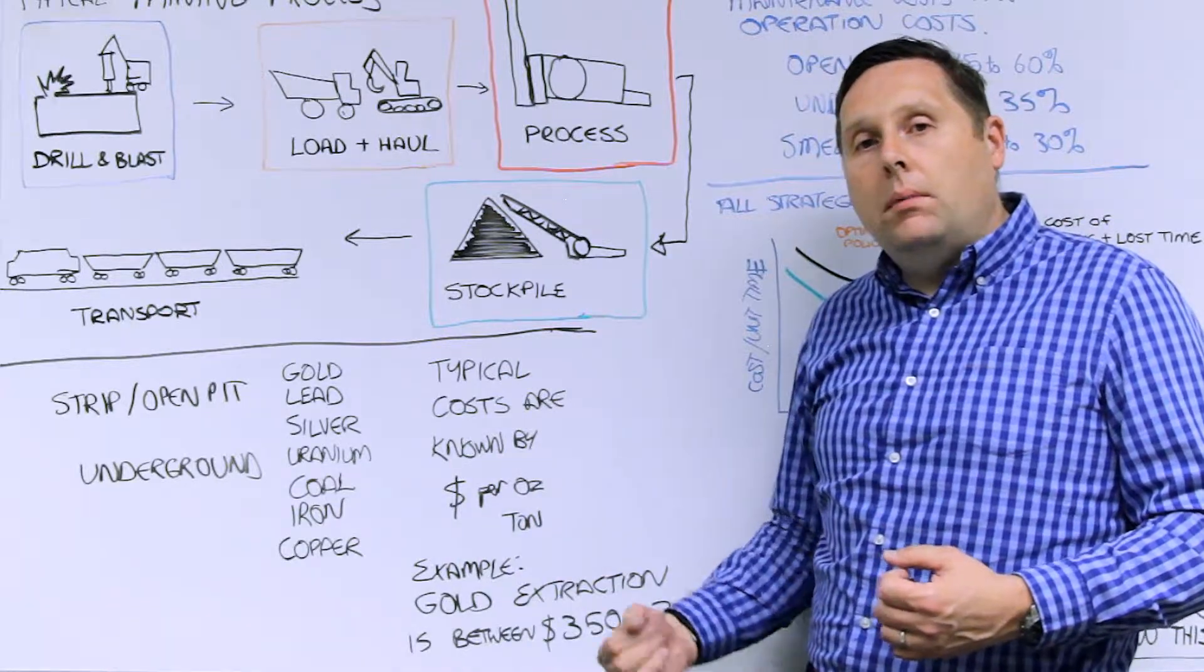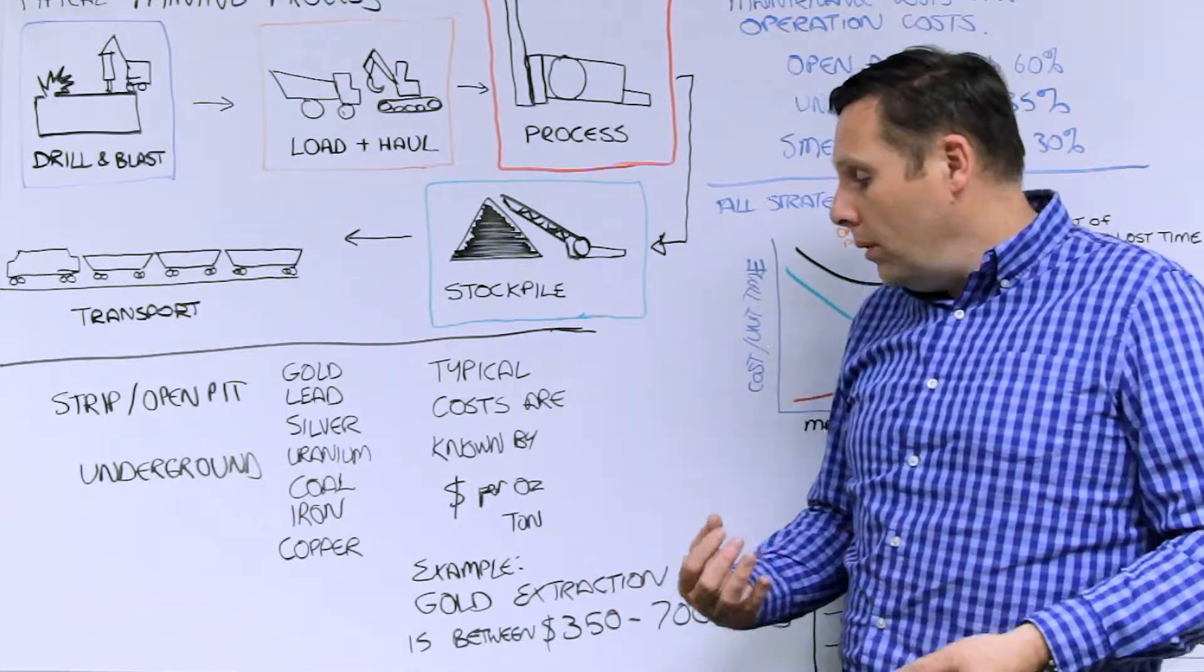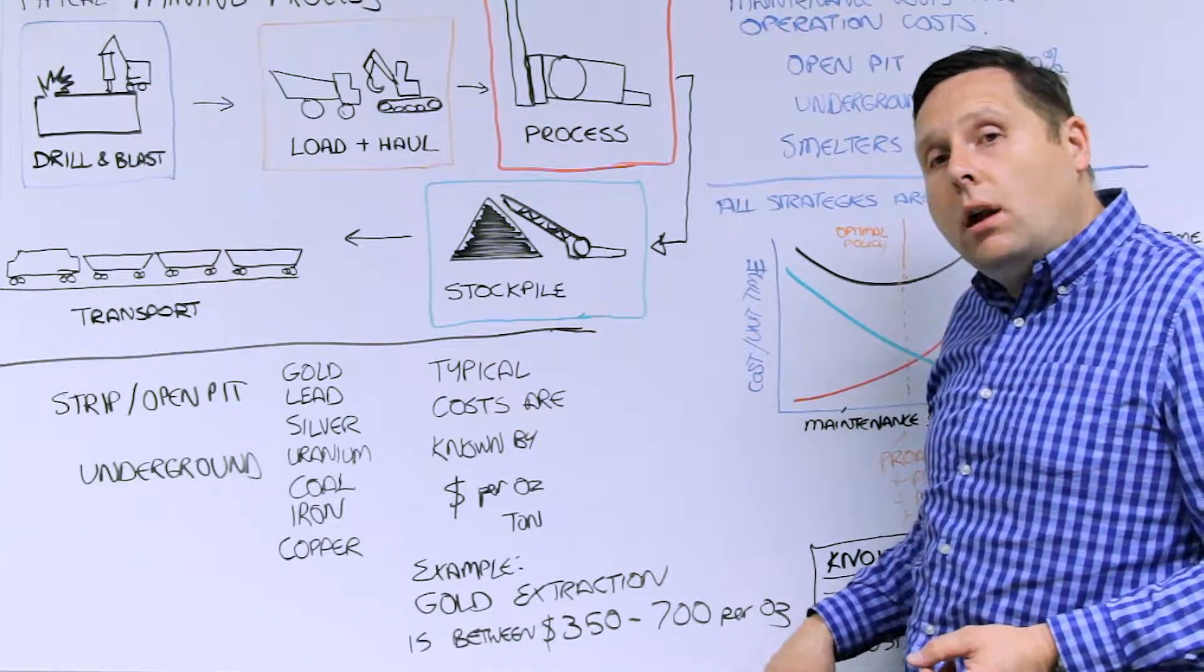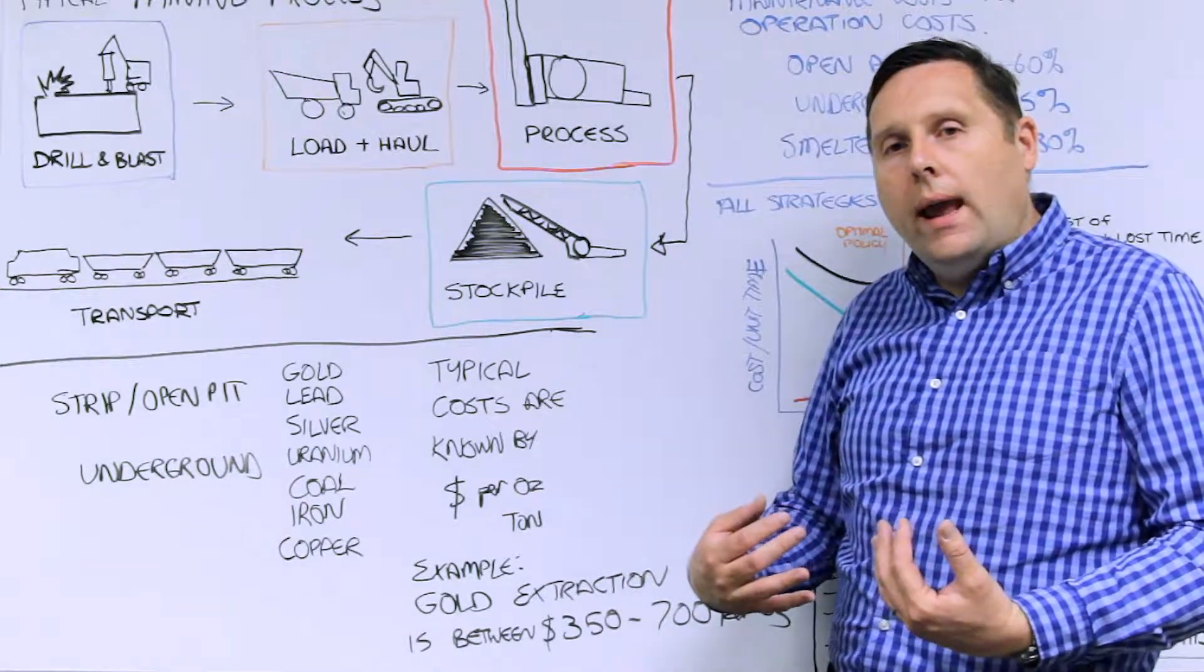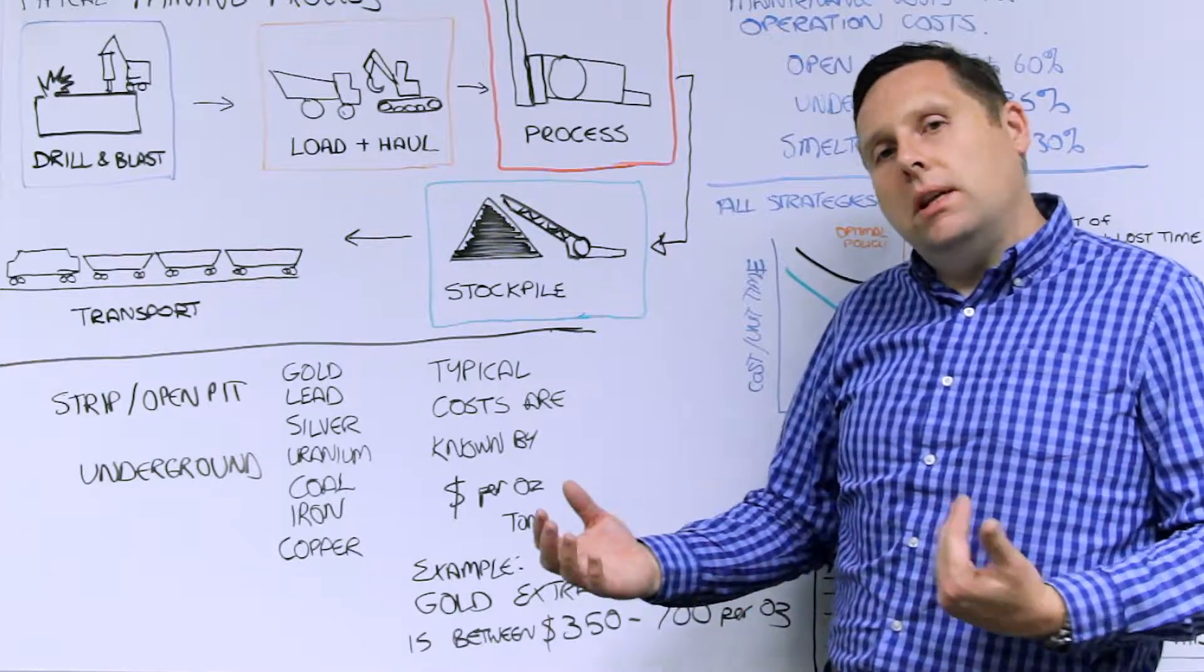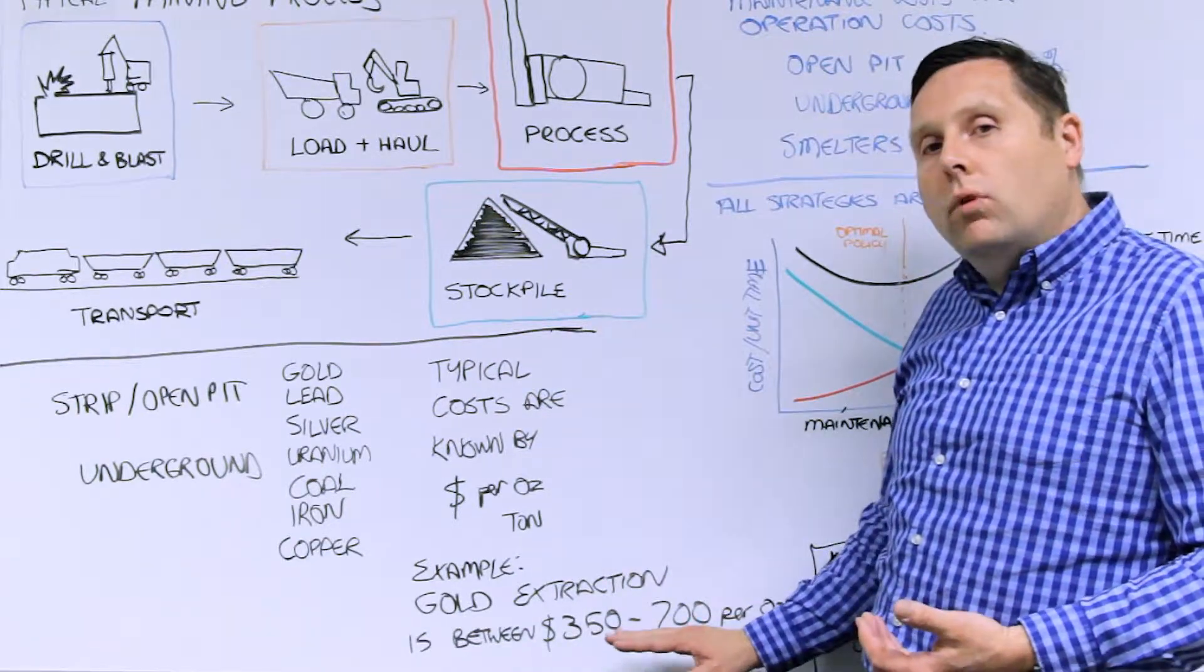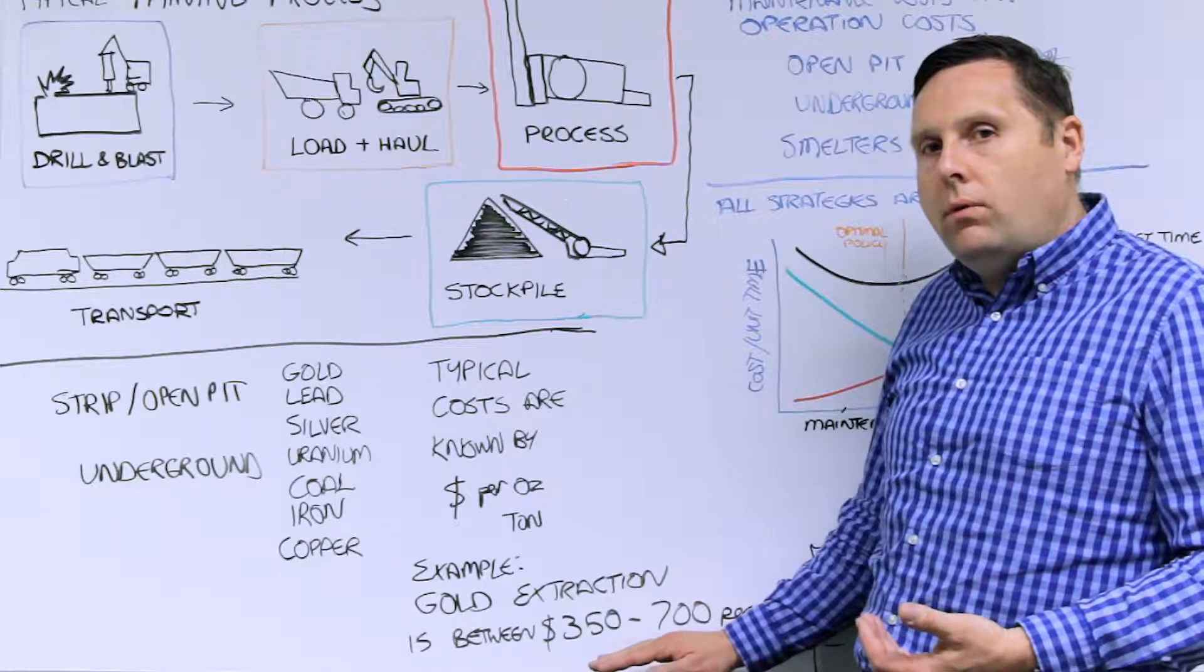For example, in the gold industry, gold extraction on an open pit mine could range between $350 to $700 per ounce. That's what we call the all-in cash cost, the cost to get it there. Compare that to what the typical gold price is on the stock exchange and you can see what their margin is. So all manufacturing, all mining companies are looking to try and reduce their cost to get their product out of the ground and process before it goes to market.